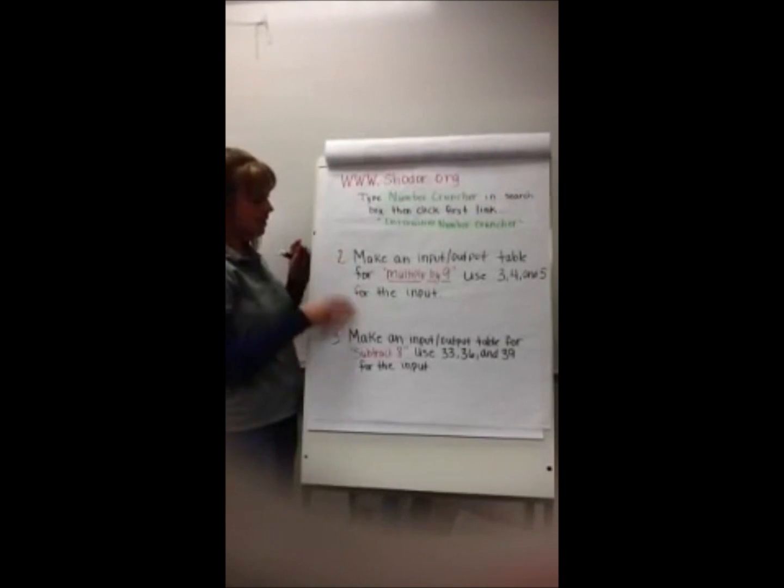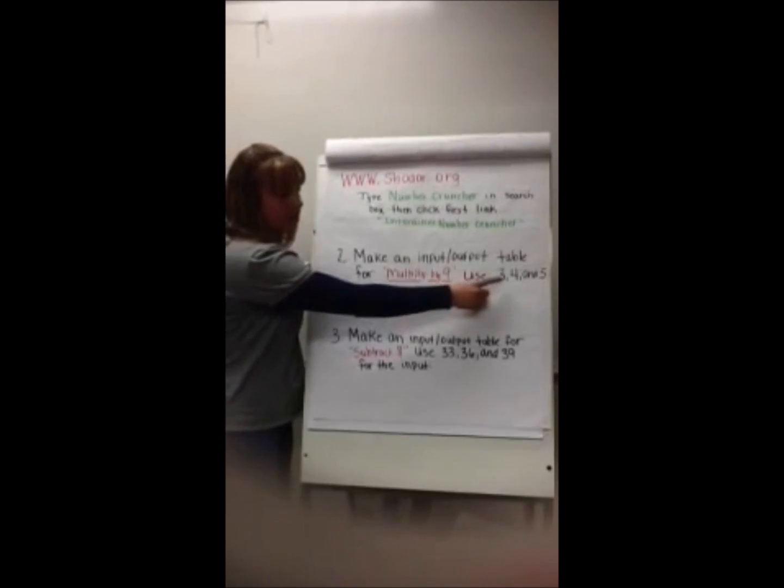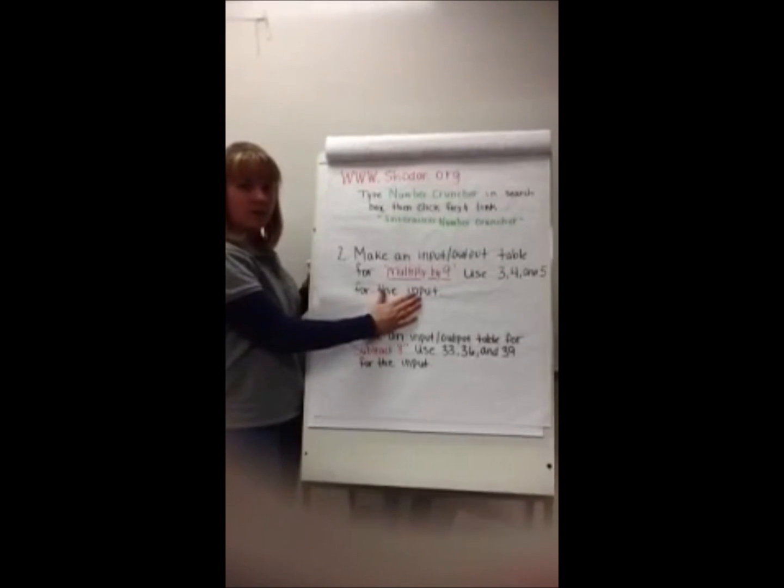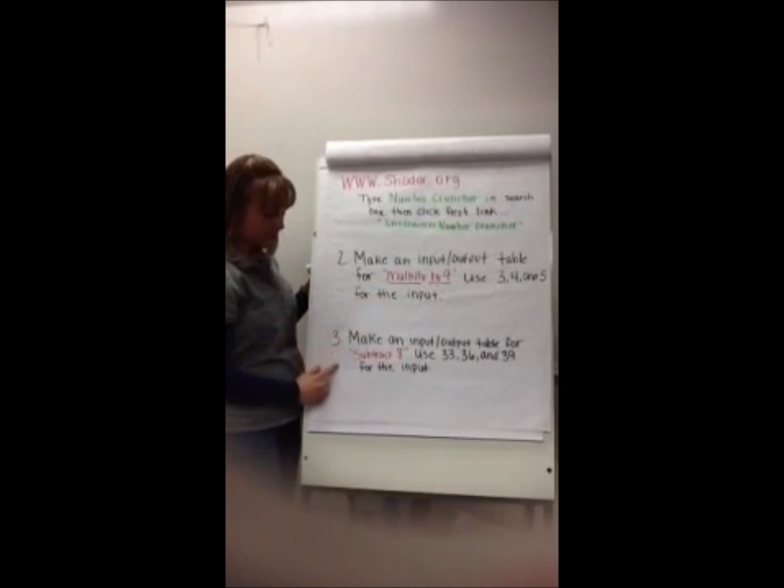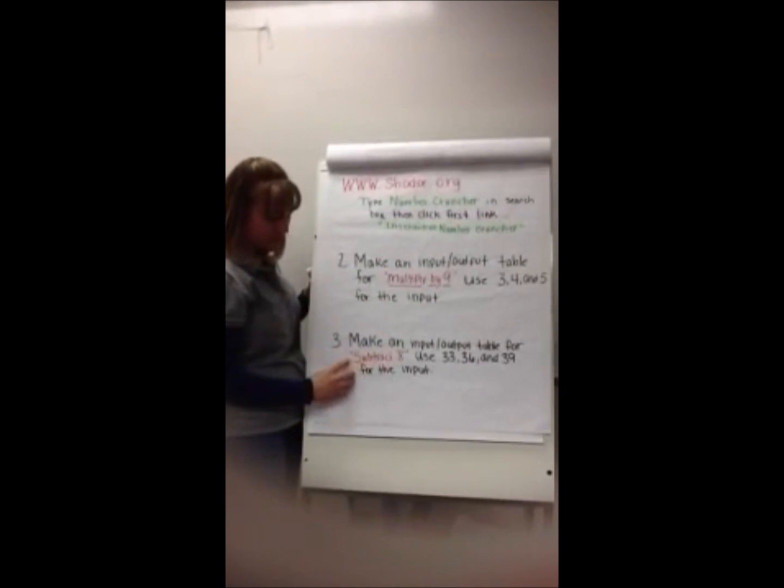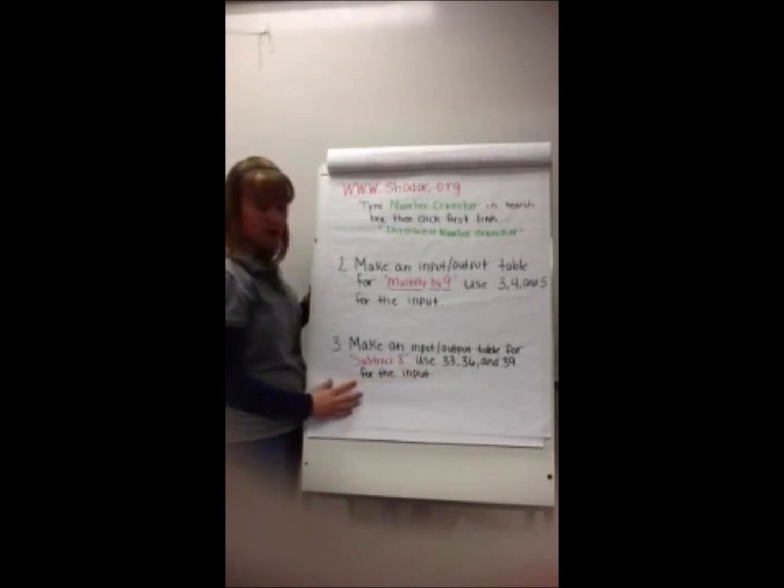And here is your homework that you can do at home, your extra practice. I'm going to make an input-output table for multiply by 9. Use 3, 4, and 5 for the input. Draw a table just like on the previous slide. And apply all of these. And the same with this one. Make an input-output table for subtract 8. Use 33, 36, and 39 for the input.